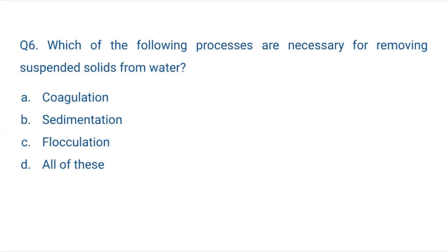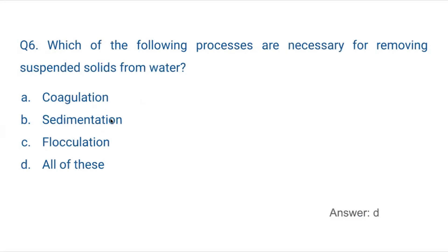Question 6: Which of the following processes are necessary for removing suspended solids from water? A. Coagulation, B. Sedimentation, C. Flocculation, or D. All of the above. The answer is D — all of these. First we add coagulant in coagulation, then flocculation forms flocs, then sedimentation settles them, and finally clear water is released.